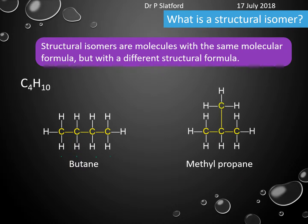The next one I'm going to give you is called methylpropane. This is different because I've only got three carbons in a row — I can't join all four up in a single line, so it must be different. These two are different.